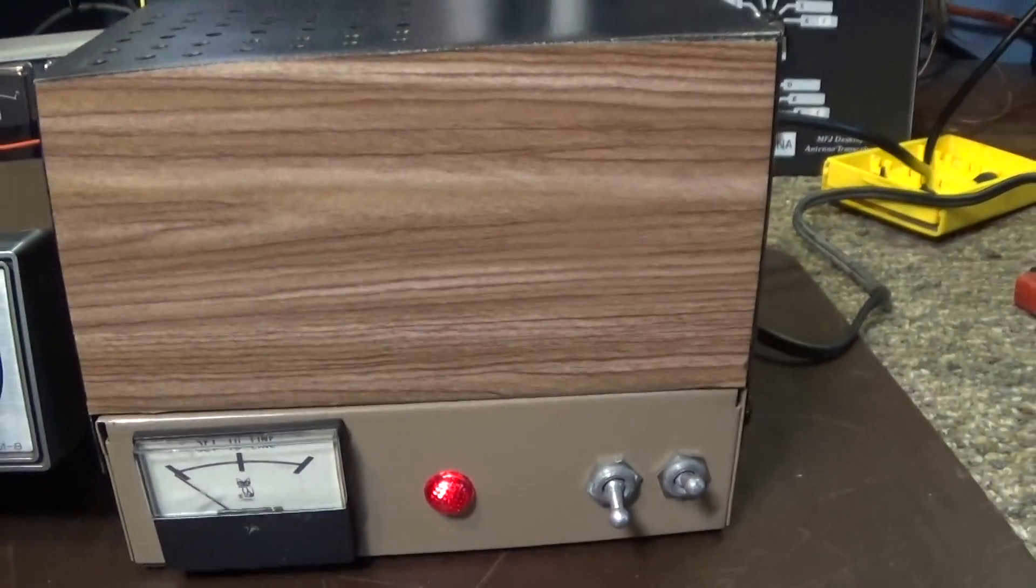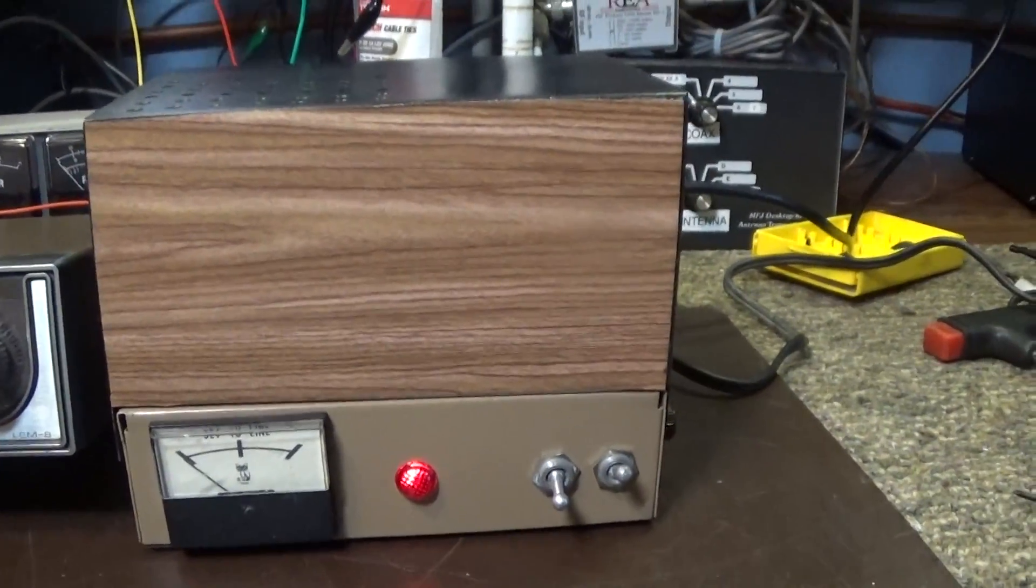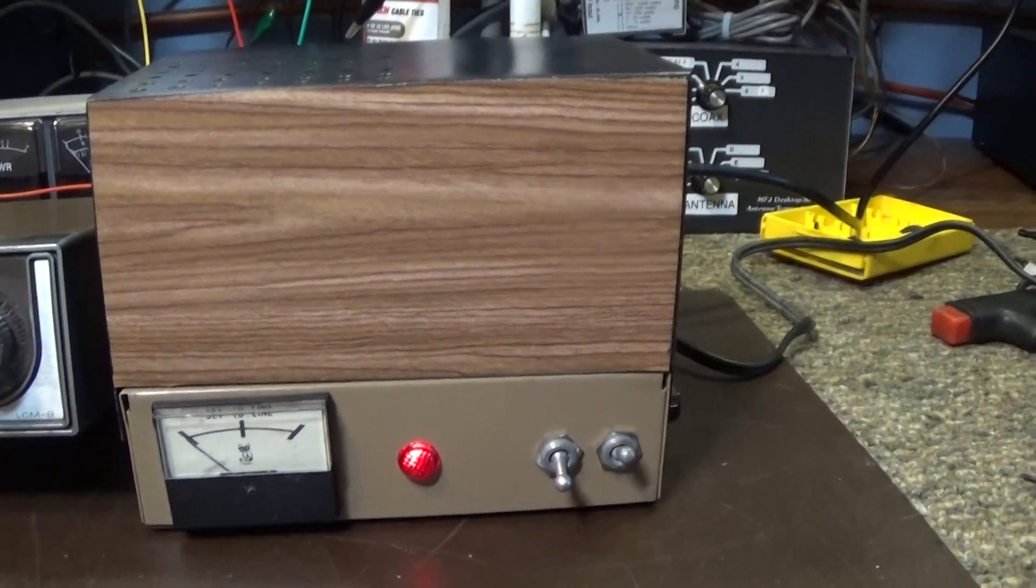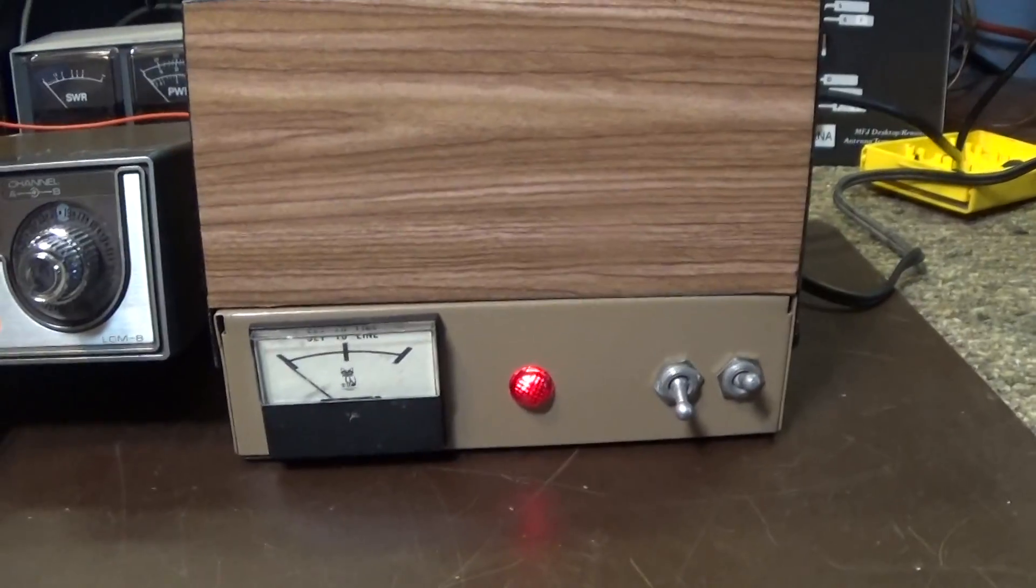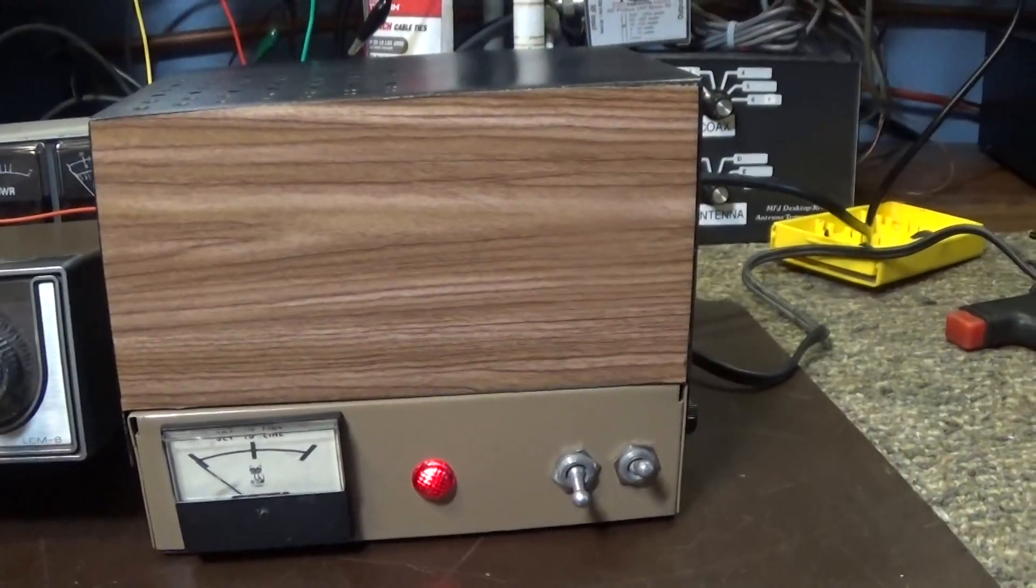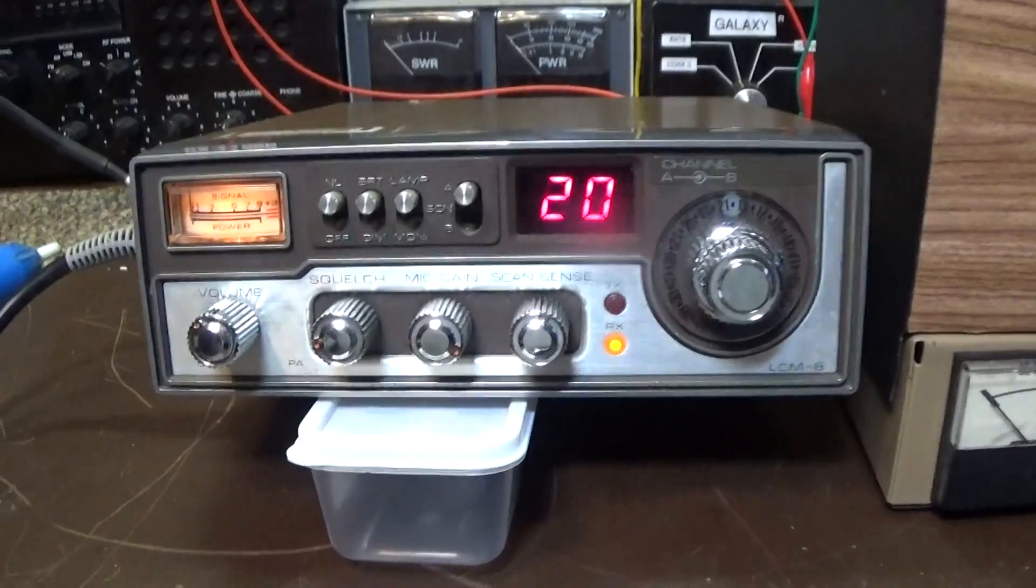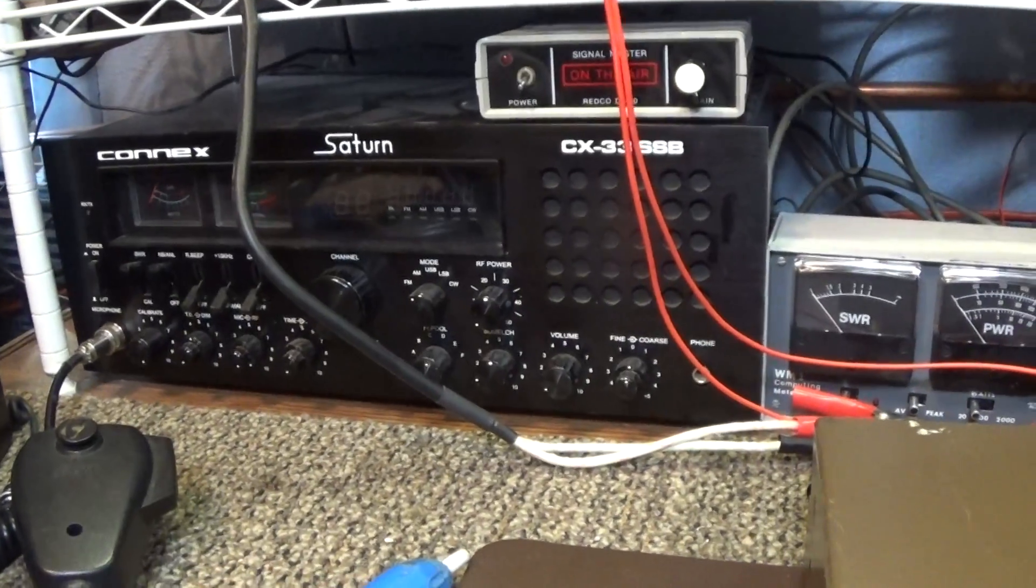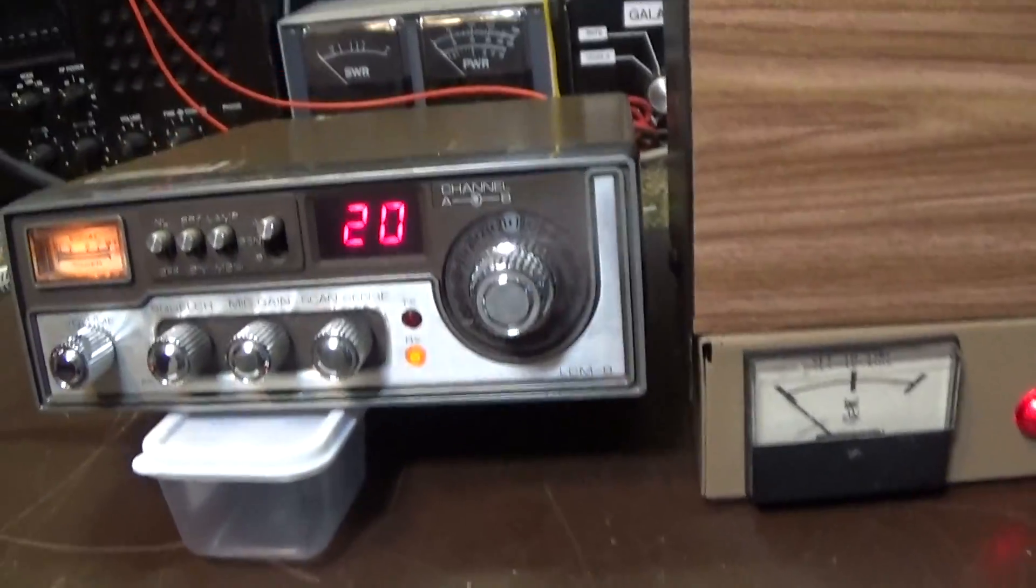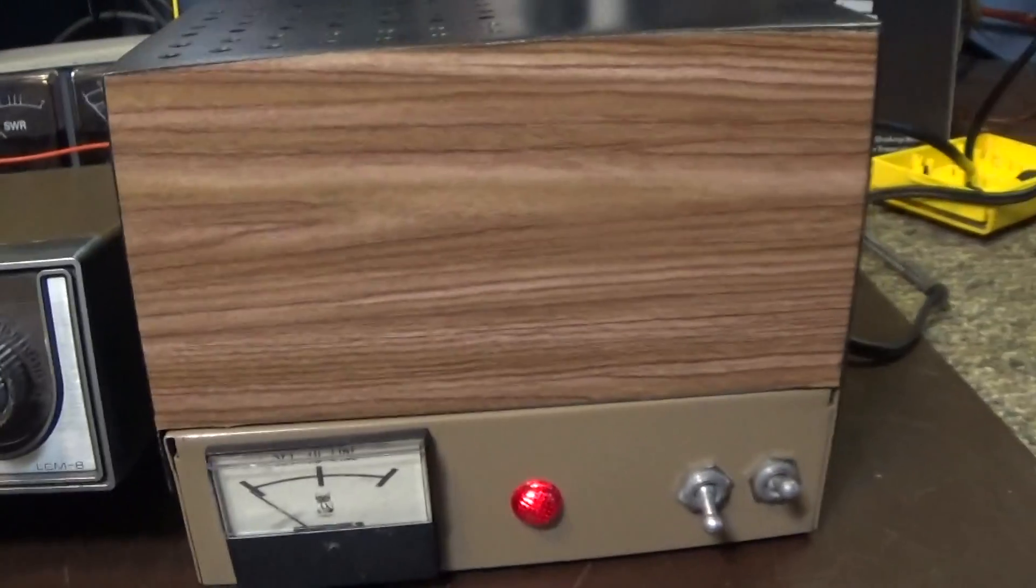This one looks pretty clean. It works, but the meter does not work on this one, and I don't have the time or the patience to worry about fixing the meter. We hooked up a regular 4-watt CB going into it, because the Galaxy that I normally use for the bench radio swings to 50 watts already, and I certainly don't want to put 50 watts into a little 40-50 watt modulator here.